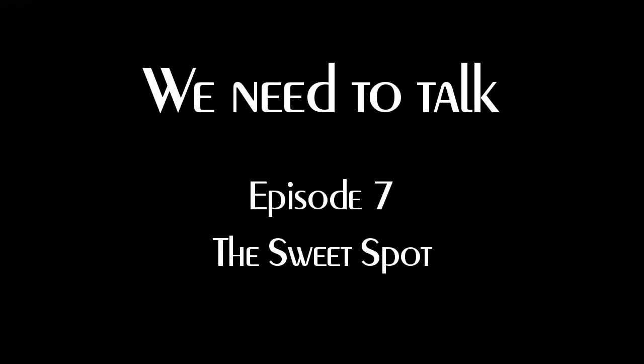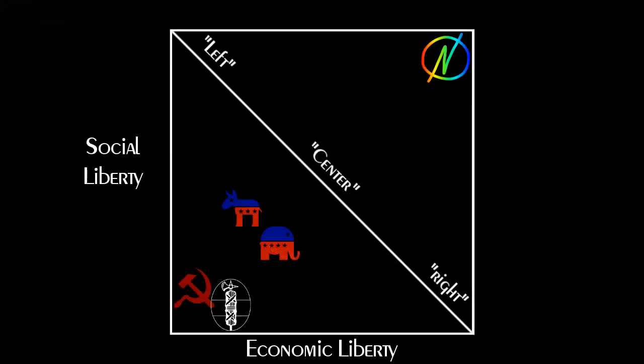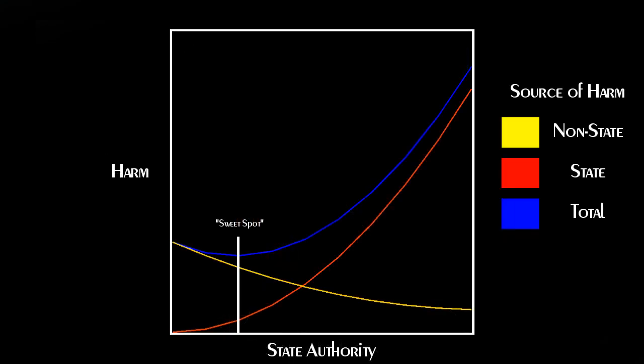Hey, this is Jeff, and we need to talk. In episode 5, we showed why the one-dimensional model of political thought is misleading, and introduced the two-dimensional model. In episode 6, we discussed nonarchy and developed a graph demonstrating the sweet spot of state authority—the minimum required to prevent the worst that people would do to each other, but not enough to do significant harm to the people itself. Today, I want to dig just a bit deeper into that graph, and then talk about concrete steps we can all take to reduce oppression and maximize liberty.